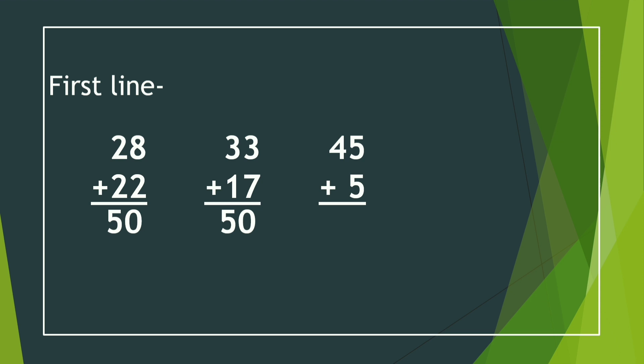For 45 and 5, we write only 0 and our 1 will be added with our left-side 4. 4 and 1 is 5. Then counting further: it will be 10, so we write only 0 and our 1 will be added with our left-side 3. 3 and 1 is 4, so it will be 40.